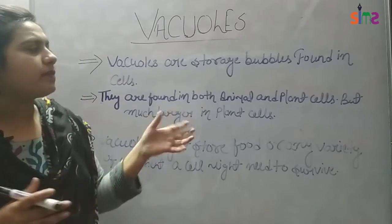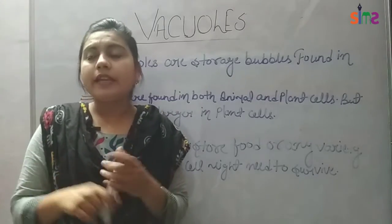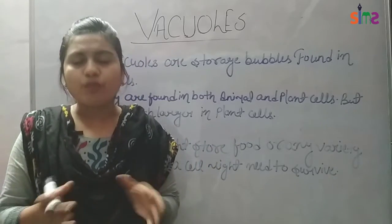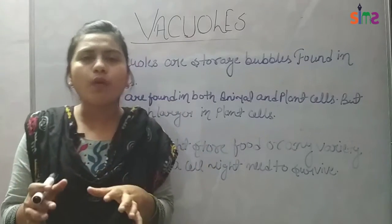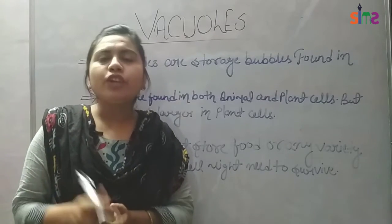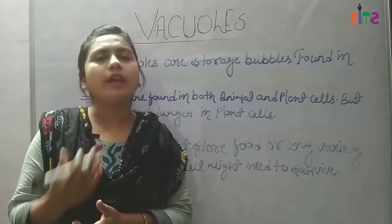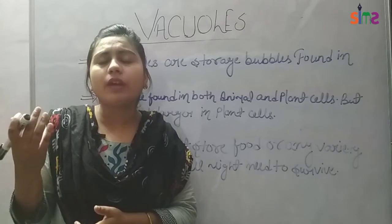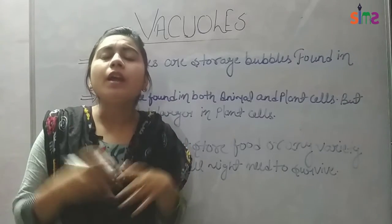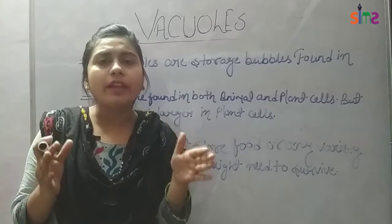In animal cells, vacuoles are present in small size or may be absent. In plant cells they are present in large size. They are present in plant cells in large size and they are located in the center of the plant cell.